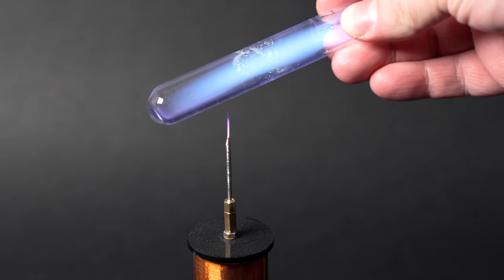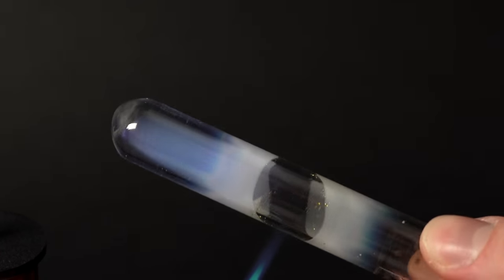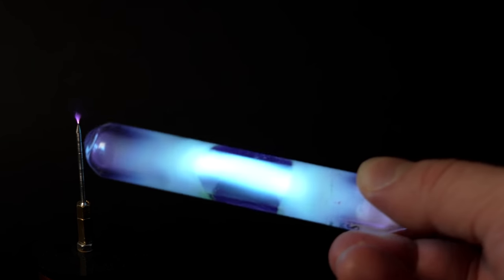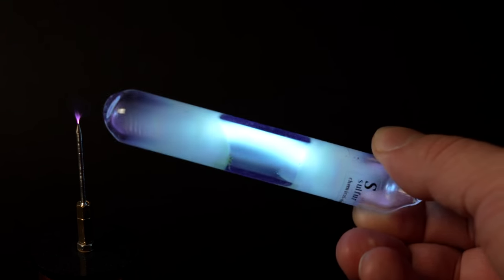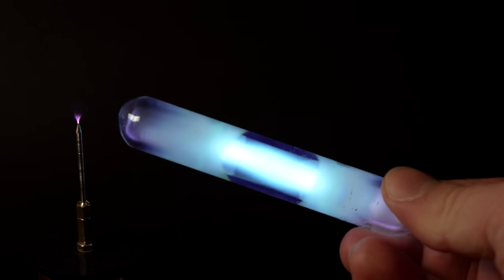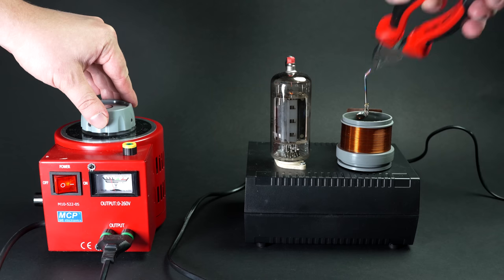You can even make non-metals glow under low pressure. For instance, this ampoule contains sulfur with mercury vapor. If you just bring an ampoule close to a Tesla coil, the mercury vapor will immediately start glowing. But if we heat the ampoule a bit, then the sulfur will start vaporizing, and eventually its vapor will turn into plasma and will start glowing with a beautiful white color, the spectrum of which closely resembles that of sunlight.